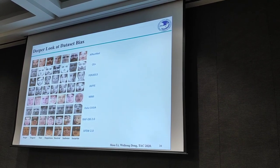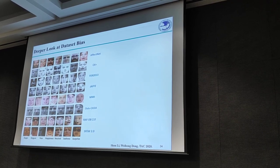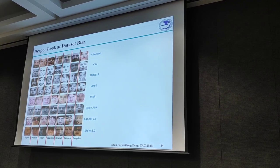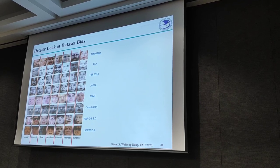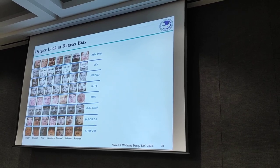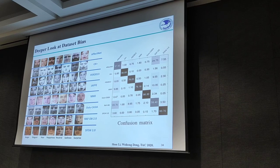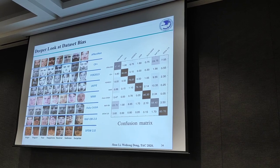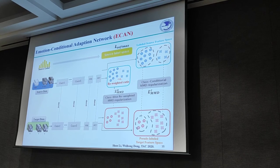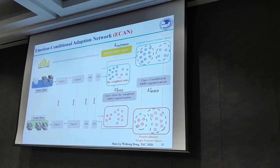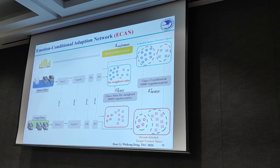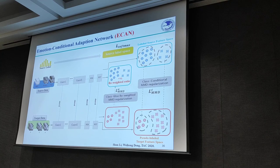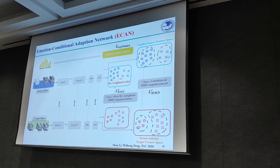To take a deeper look at this bias, we conducted an interesting experiment: instead of classifying the expression, we classify the dataset. Surprisingly, the classification accuracy is as high as expression recognition accuracy itself, indicating that the model is learning dataset-specific features rather than true expressions. Given the bias between training and target expression distributions, real-world expression recognition may fail. We designed an emotion-conditional adaptation network to address this problem, by aligning the expression-conditional feature distribution and balancing the importance of different expressions.